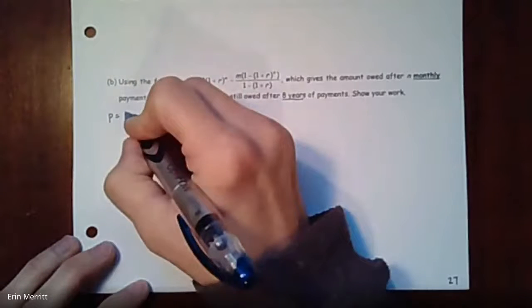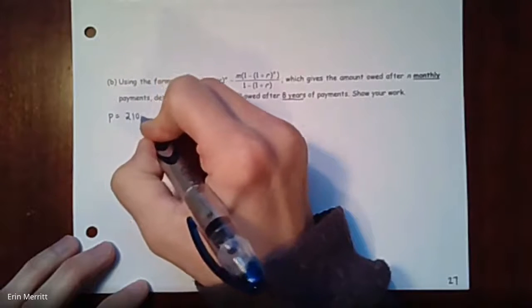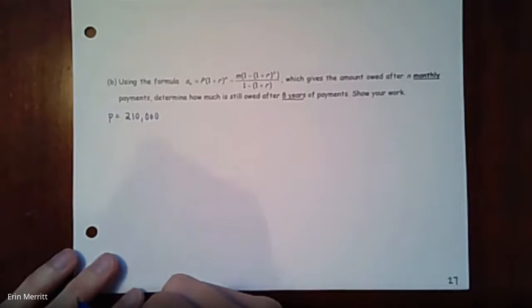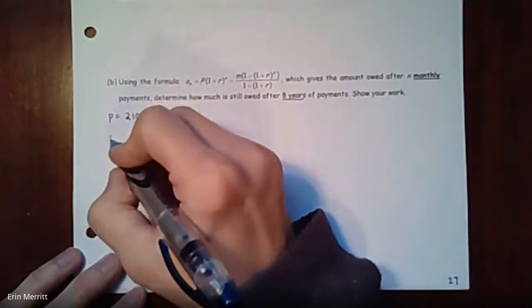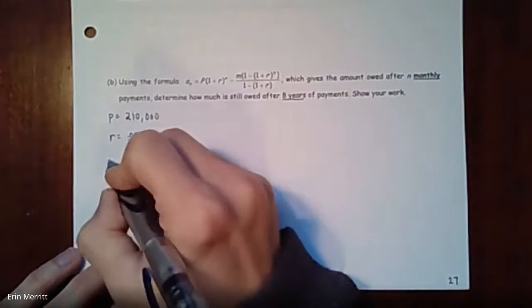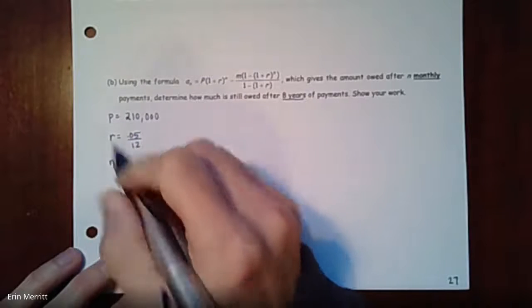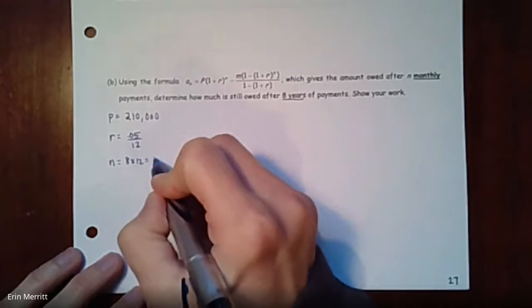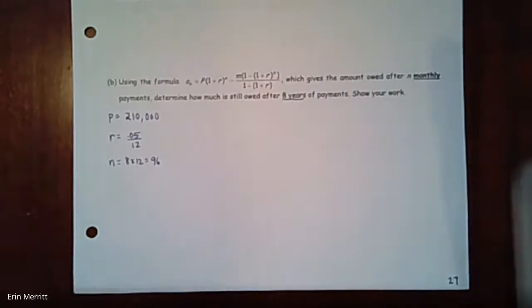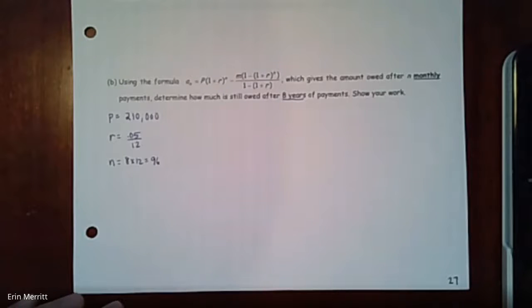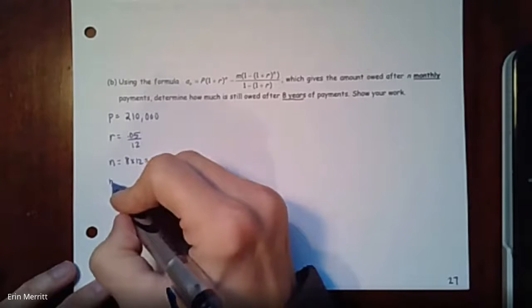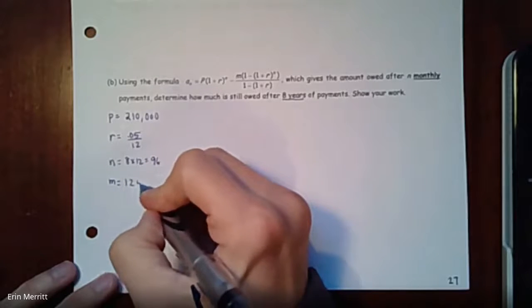Always start by figuring out what you know. The mortgage or the initial loan or the principal value is $210,000. Your r value, 5%, is going to be 0.05 divided by 12. Your n value, if it's eight years, is 8 years times 12 months - that's going to be 96. And then our m value, the monthly payment, is $1,250.